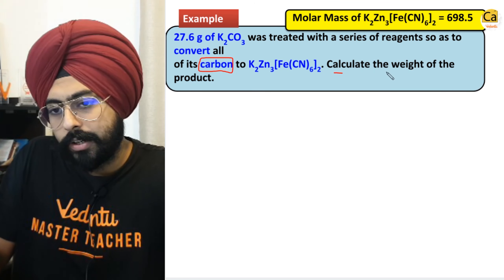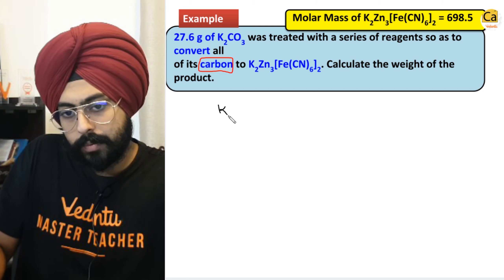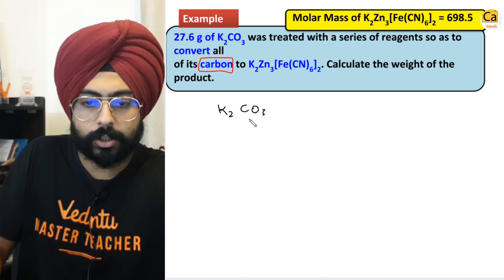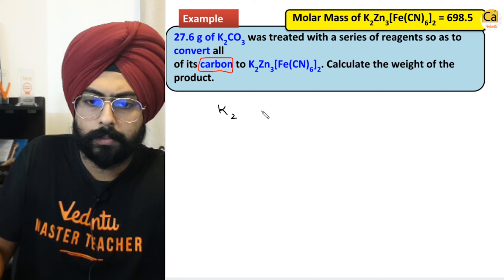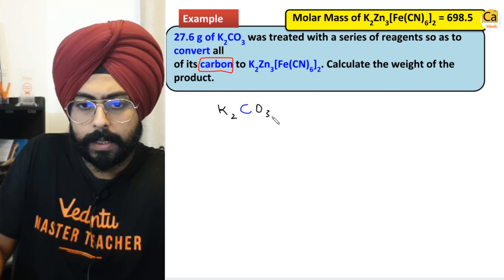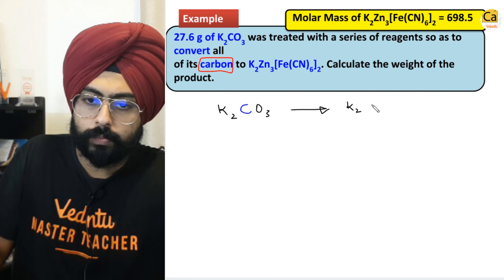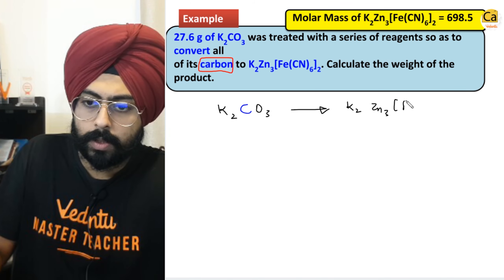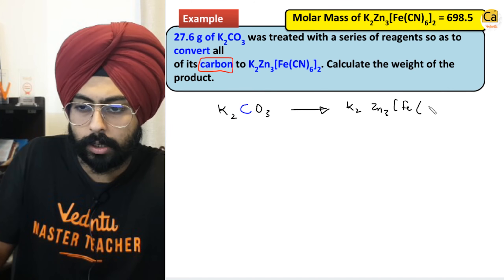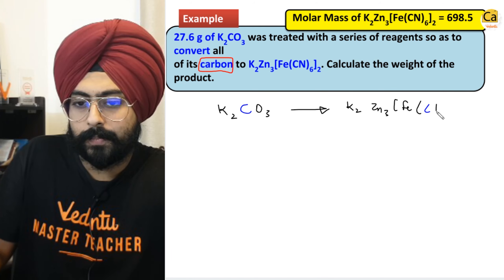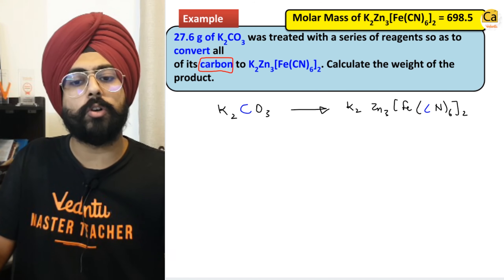What you need to do is calculate the weight of the product. You are starting only with K2CO3. The entire carbon that was present initially is now being converted into K2Zn3[Fe(CN)6]2. We are not conserving anything else.